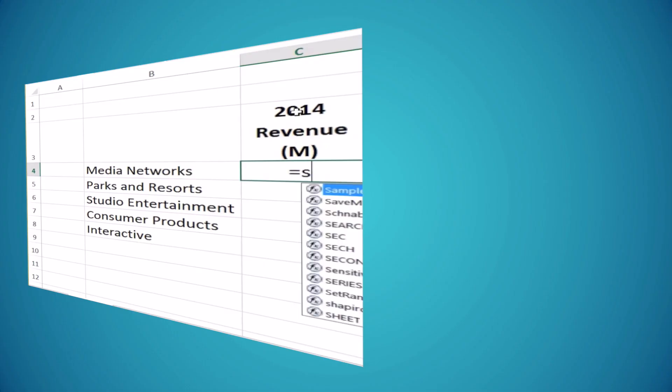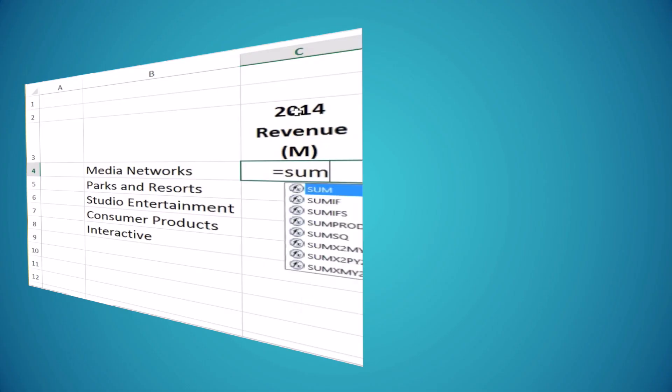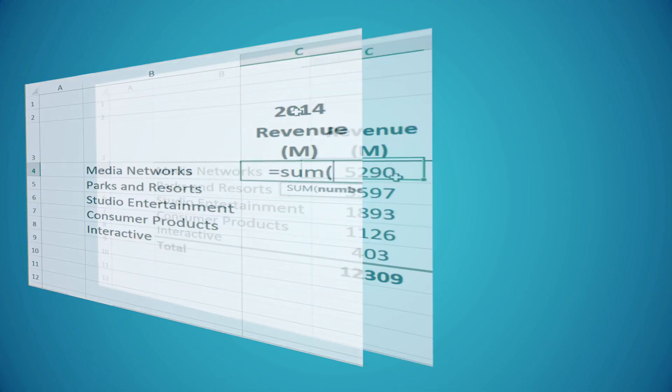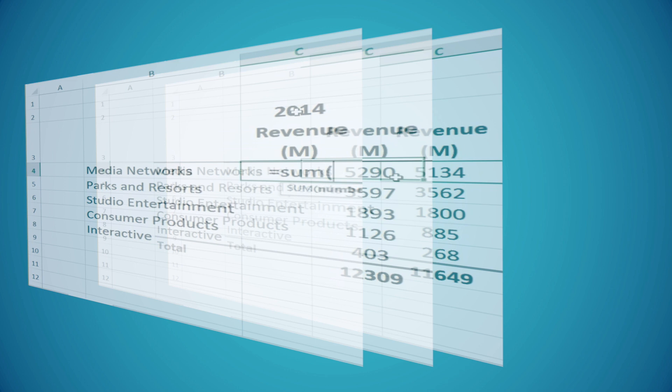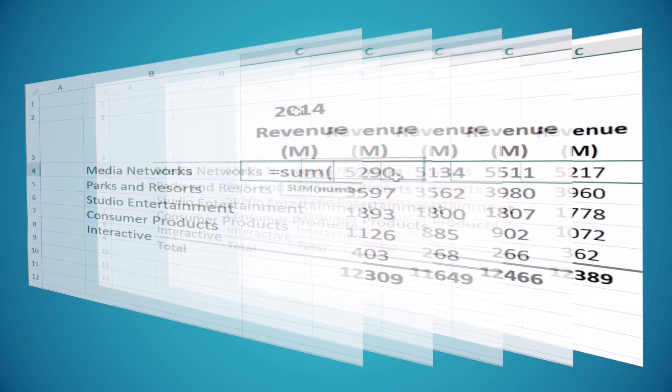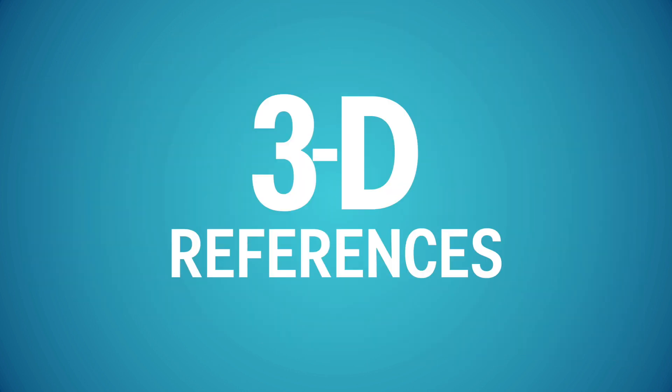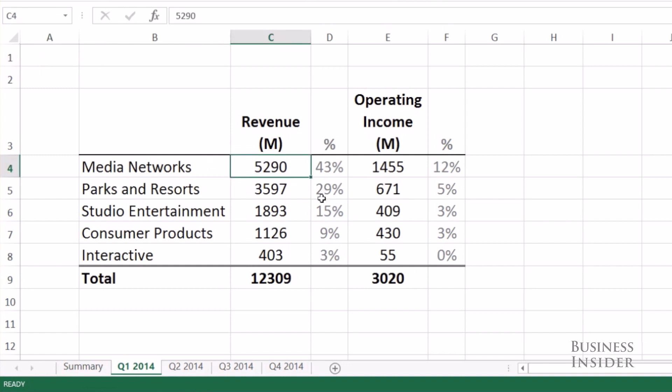Haven't you ever wished your spreadsheet was three dimensions, so you could select a range of cells across different worksheets? Well, it turns out you can. It's called a 3D reference, and that's what we're going to do today.